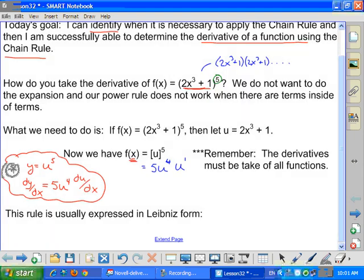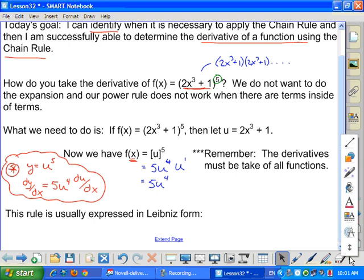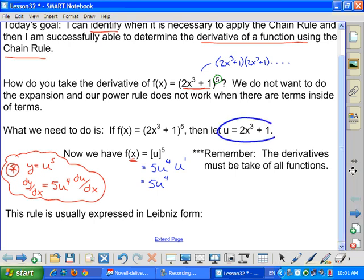So to finish this up, I need to know what u prime is because I know that 5u to the fourth is multiplying u prime. And I find u prime from up top. I know this is the u function. So the derivative of u, or u prime, is equal to 6x². So I can use that in order to substitute in for that.